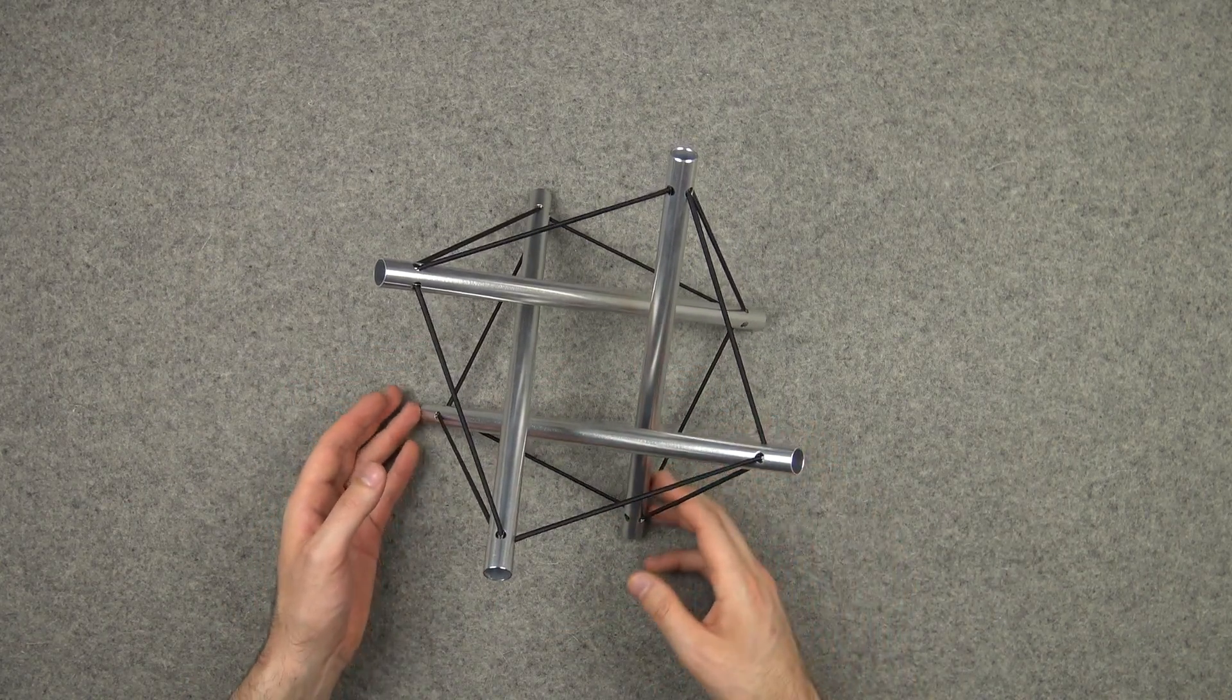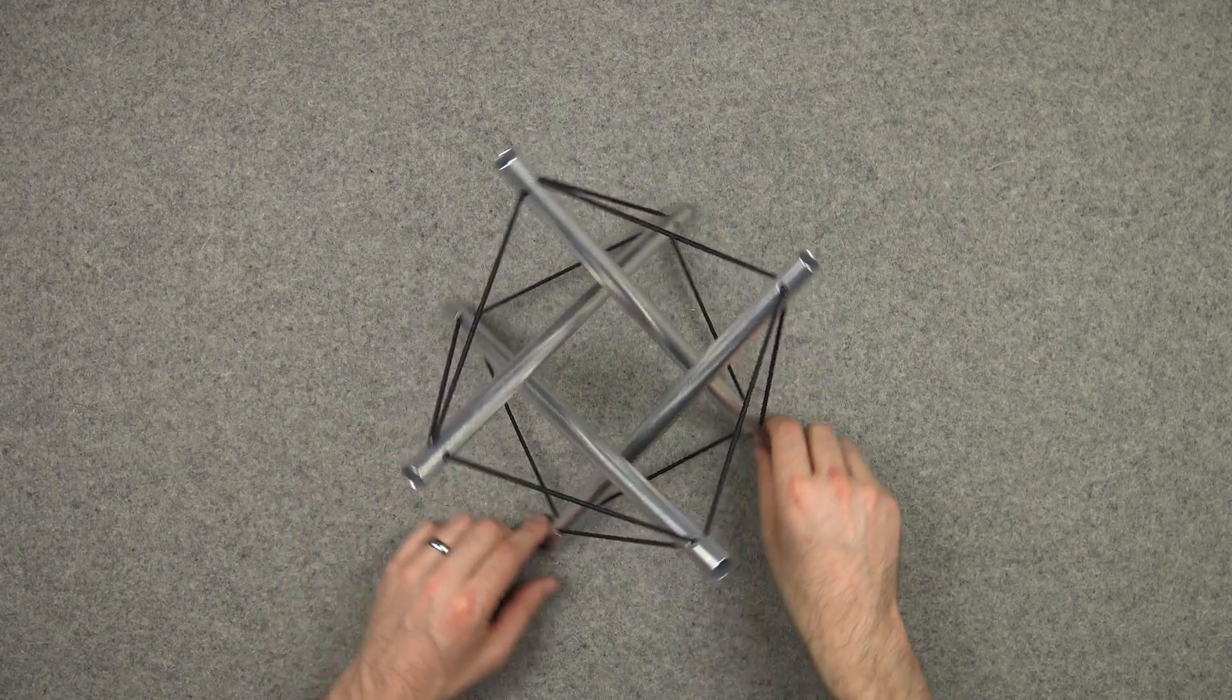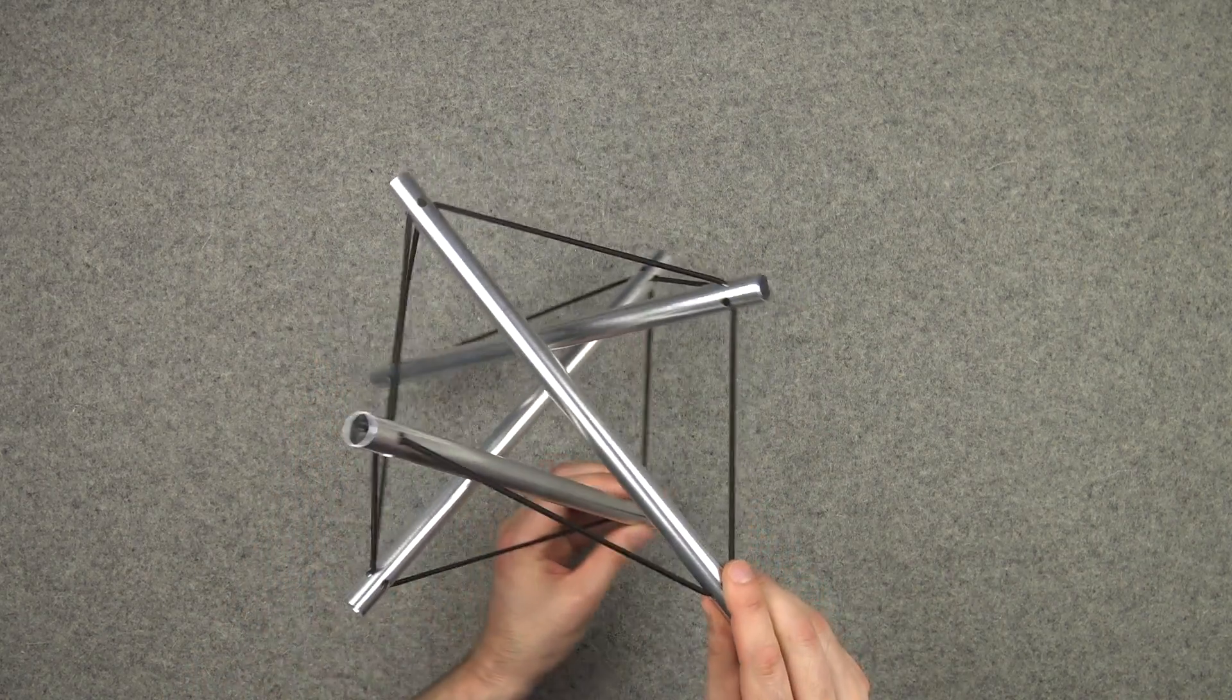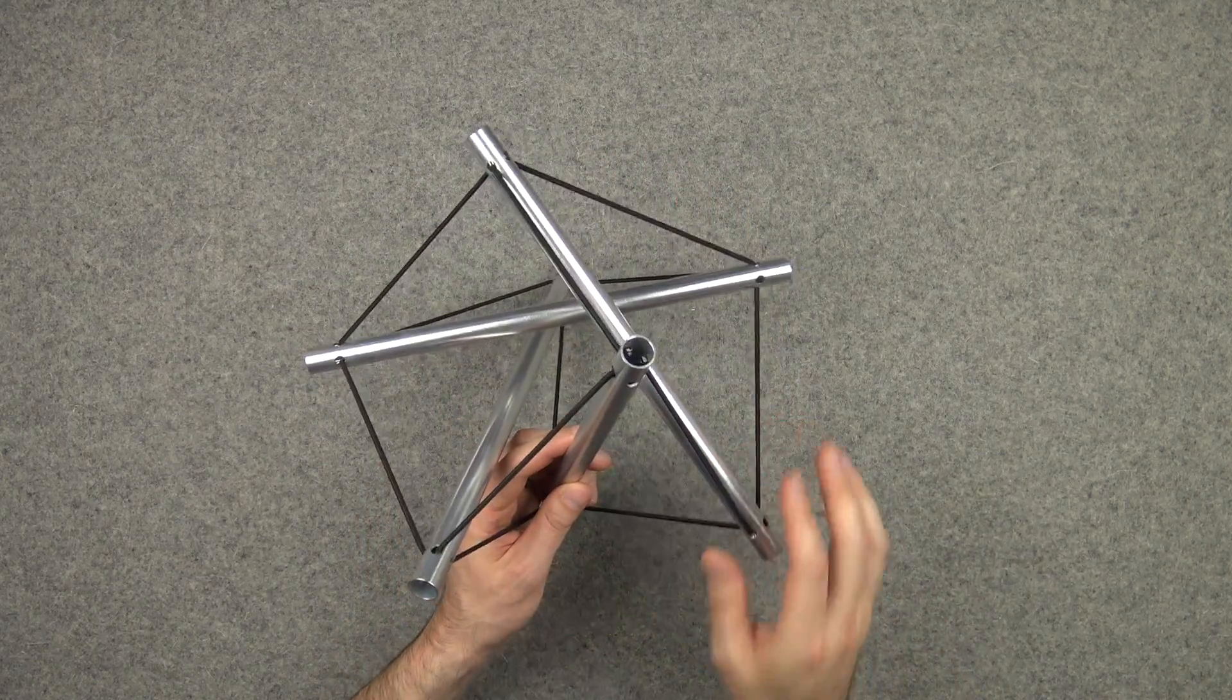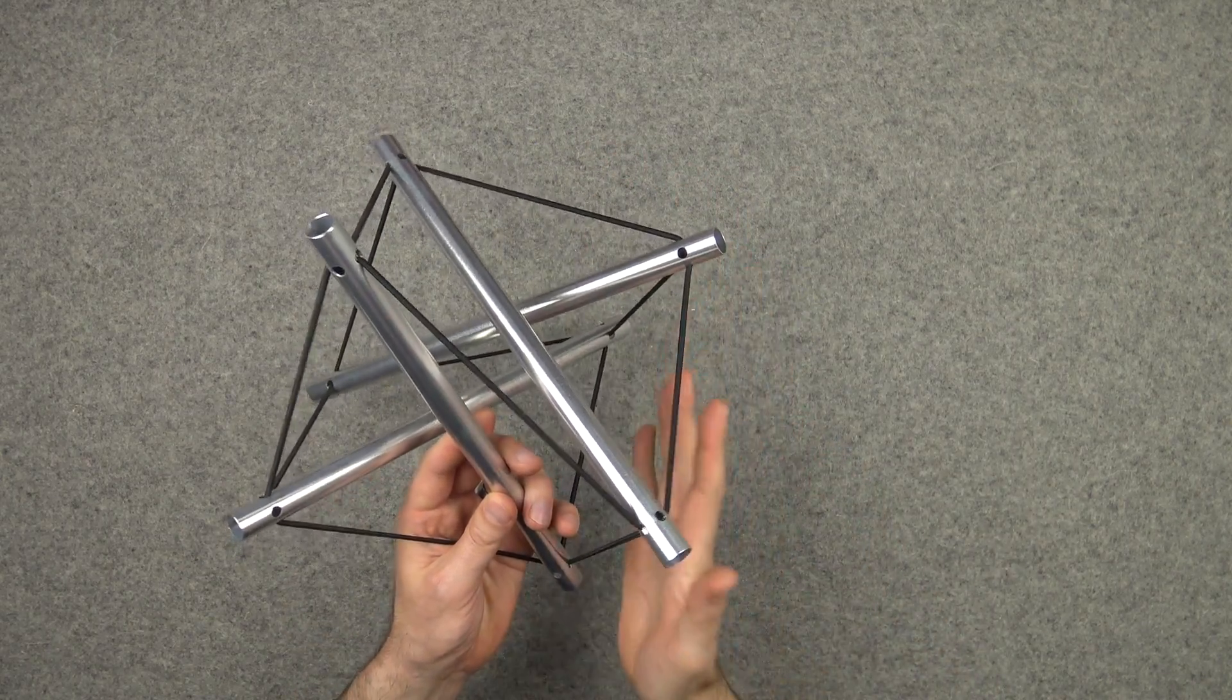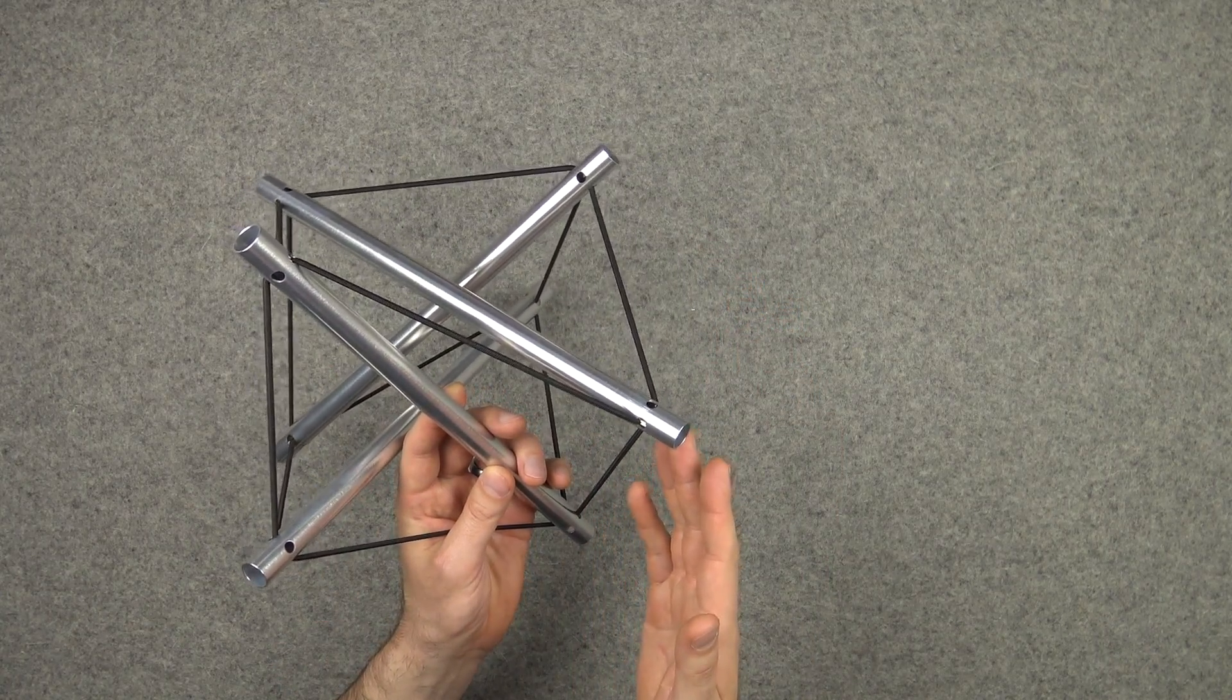So now we have four tubes. And it looks kind of the same. There's a top plane, this time it's a square, there are four links, a bottom plane, and then vertical links.